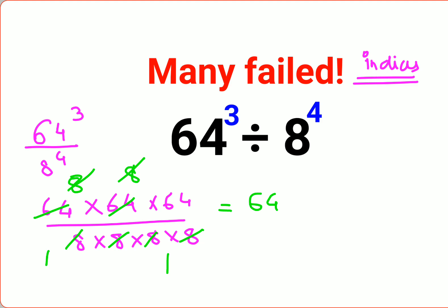The only problem is if this number was too big, then what do you do? In this case, I can write 64 cube as 8 squared, the whole raised to 3, upon 8 raised to 4.